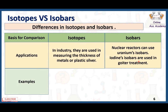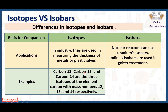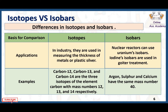For examples of isotopes: carbon-12, carbon-13, and carbon-14 are the three isotopes of carbon, and they have different mass numbers respectively, but the same atomic number, which is six. For examples of isobars: argon, sulfur, calcium, chlorine, and potassium all have the same mass number, which is 40, but their atomic numbers are different — these are isobars.